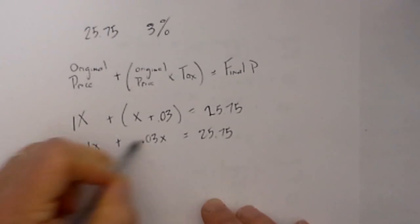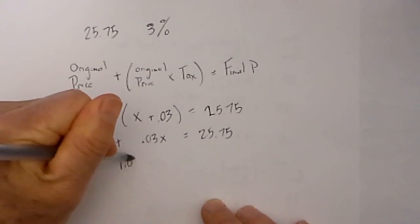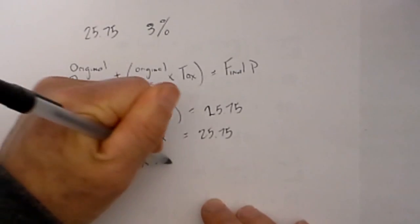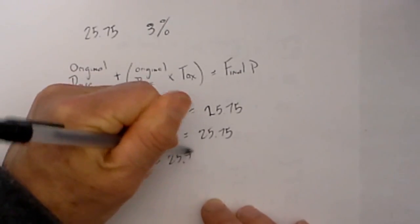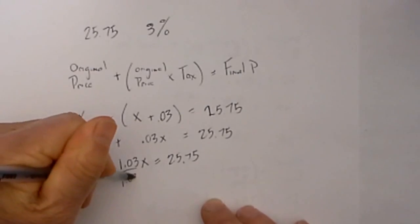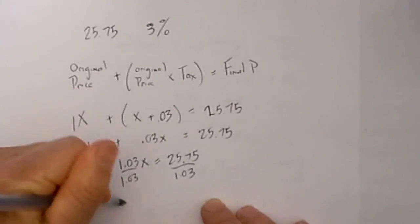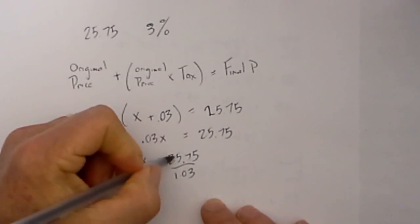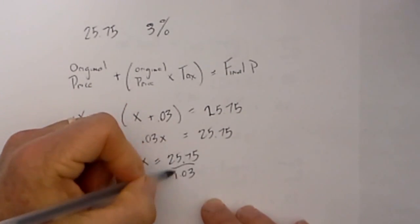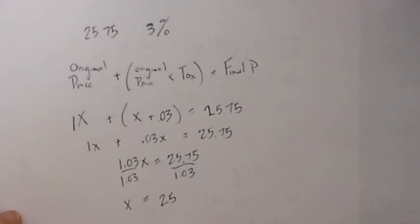I will combine the 1x and the 0.03x because the x's are alike, so that will equal 1.03x equals $25.75. So x equals 25.75 divided by 1.03, which equals 25, so our original price will be $25.00.